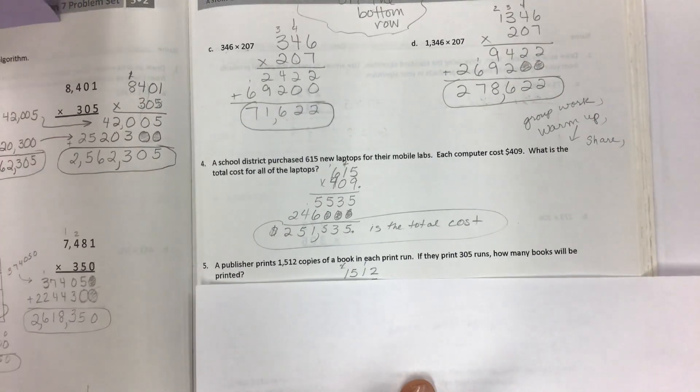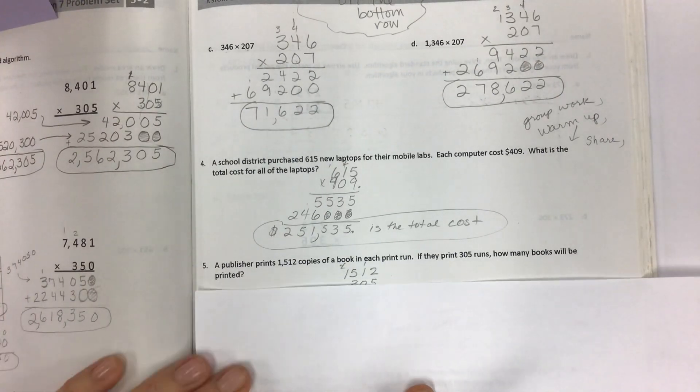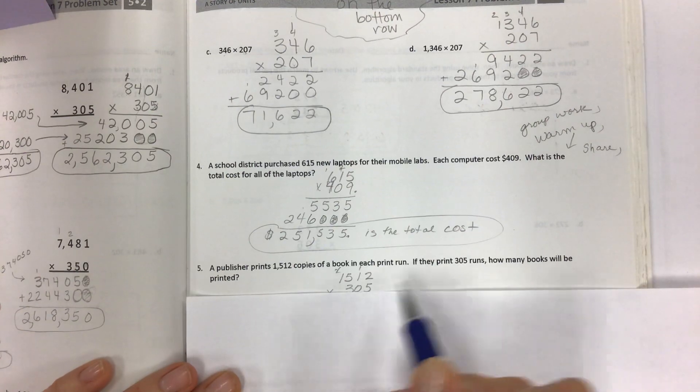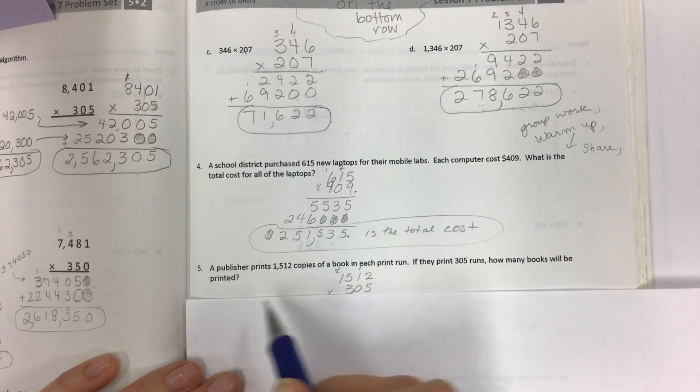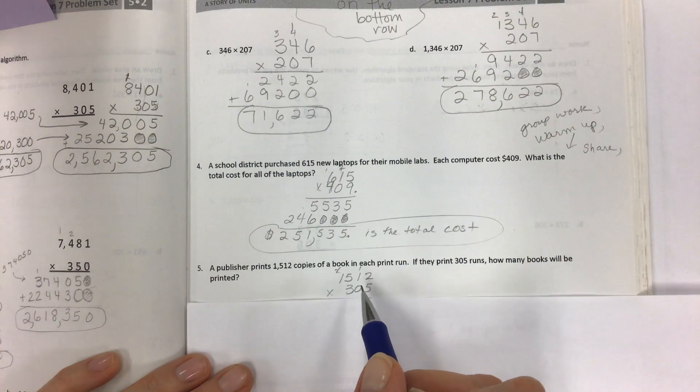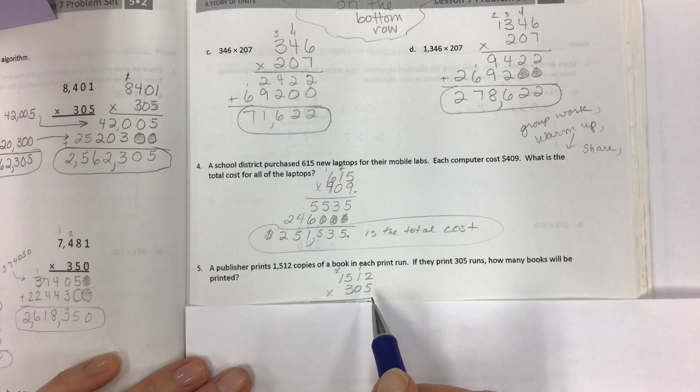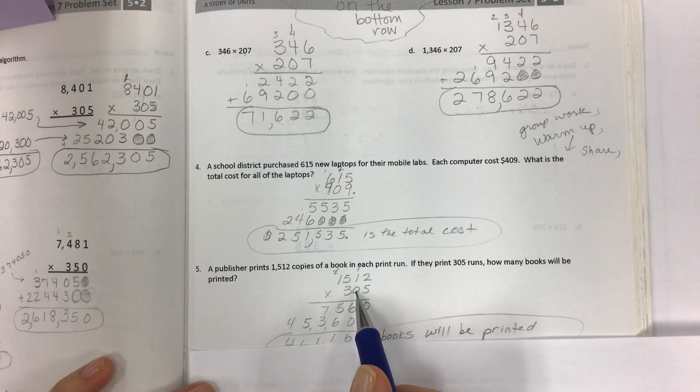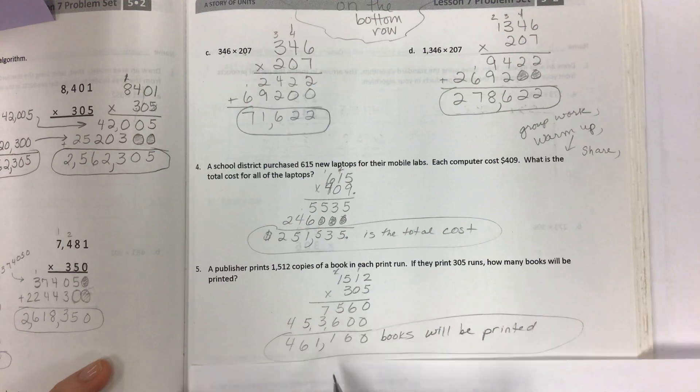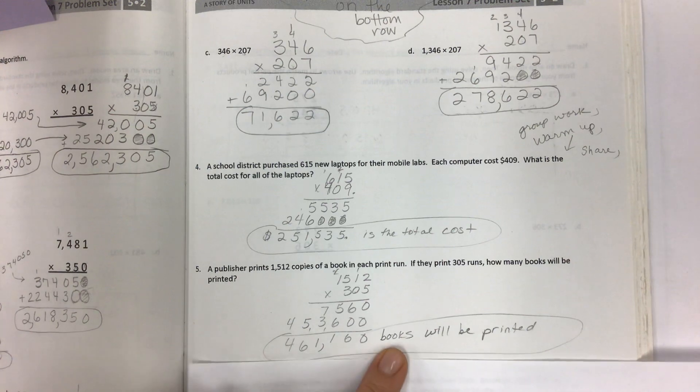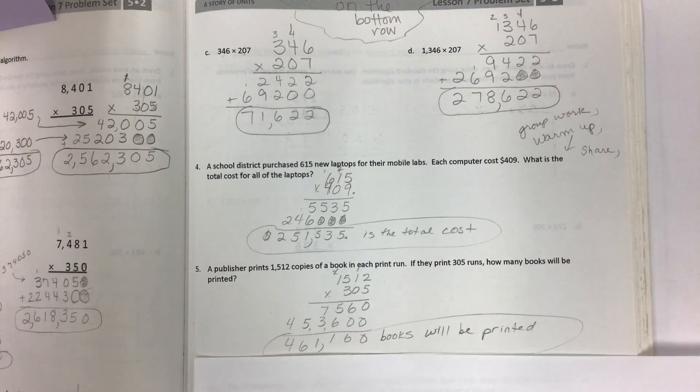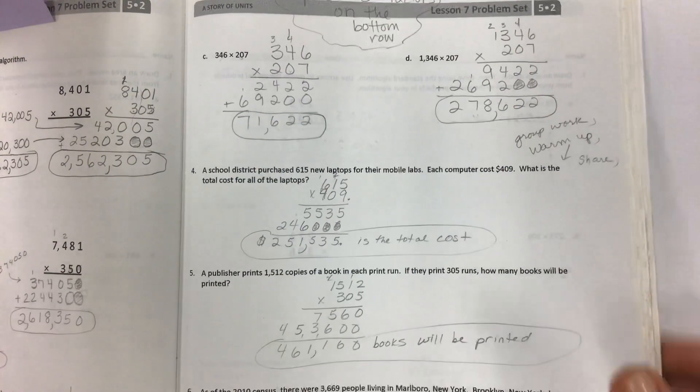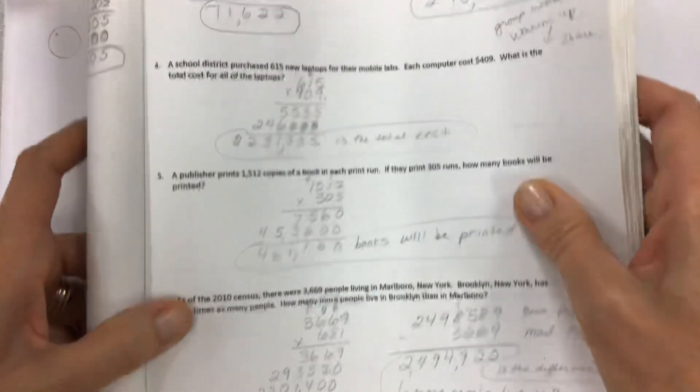A publisher prints 1512 copies of a book in each print run. If they print 305 runs how many books will be printed? These are very straightforward questions. They're just trying to get you to set it up and practice your multiplication. So again factor with the zero on the bottom also four by three the three would go on the bottom and there you go do your multiplication and you have your total number of books that will be printed. Please label all your answers carefully. If it's a word problem it needs words in your answer.